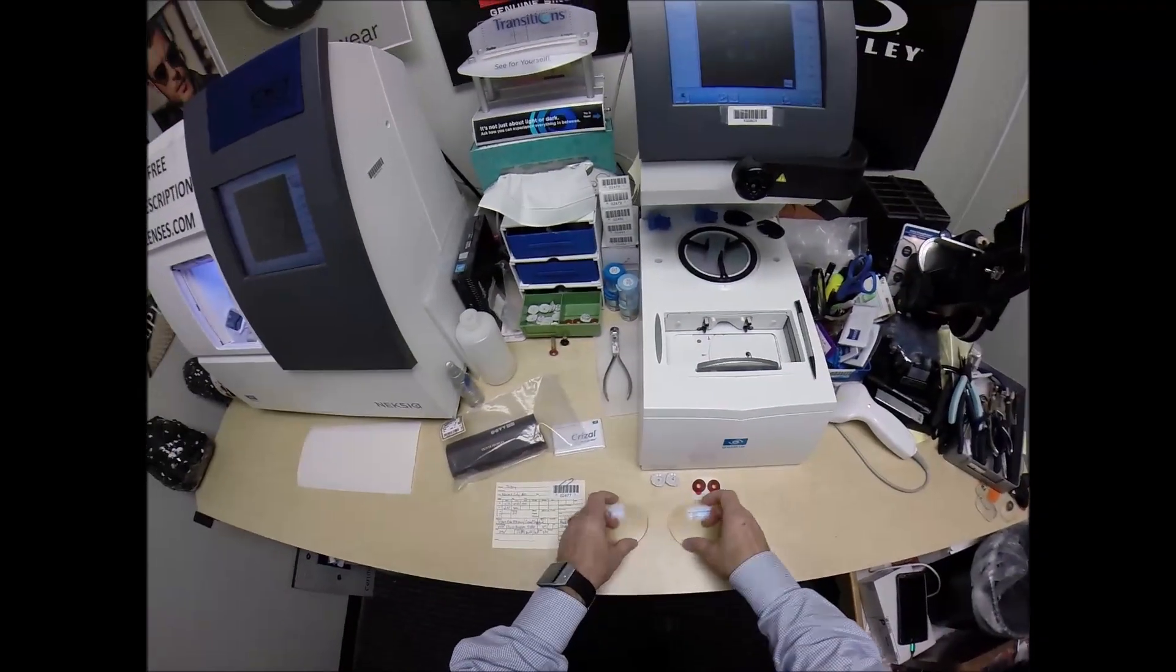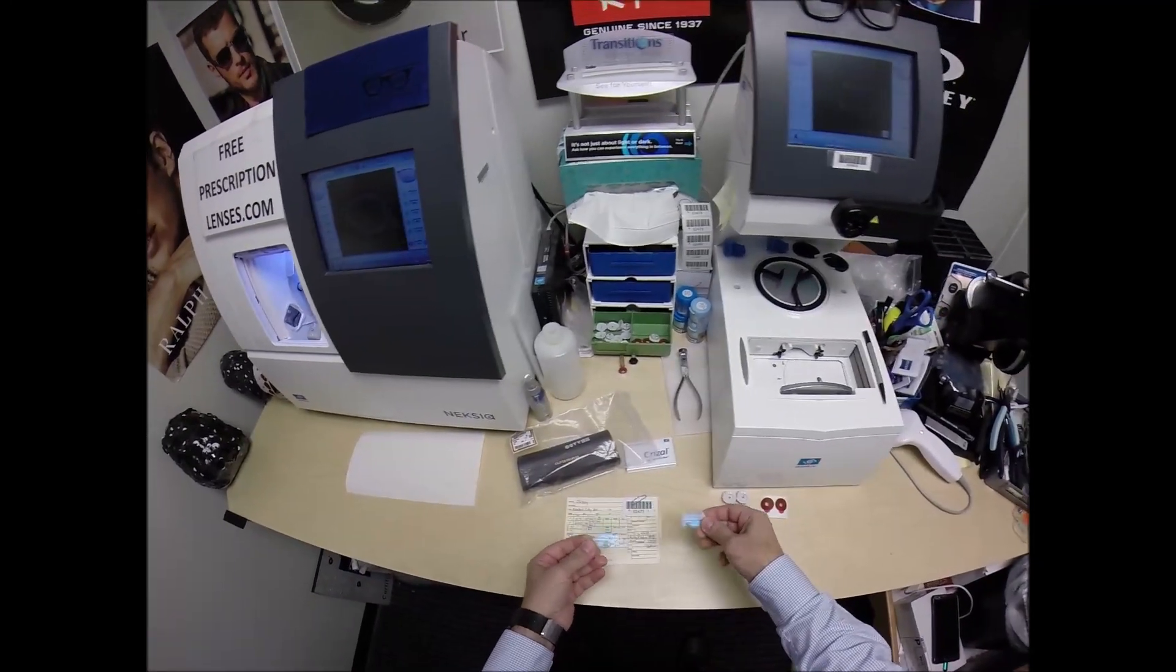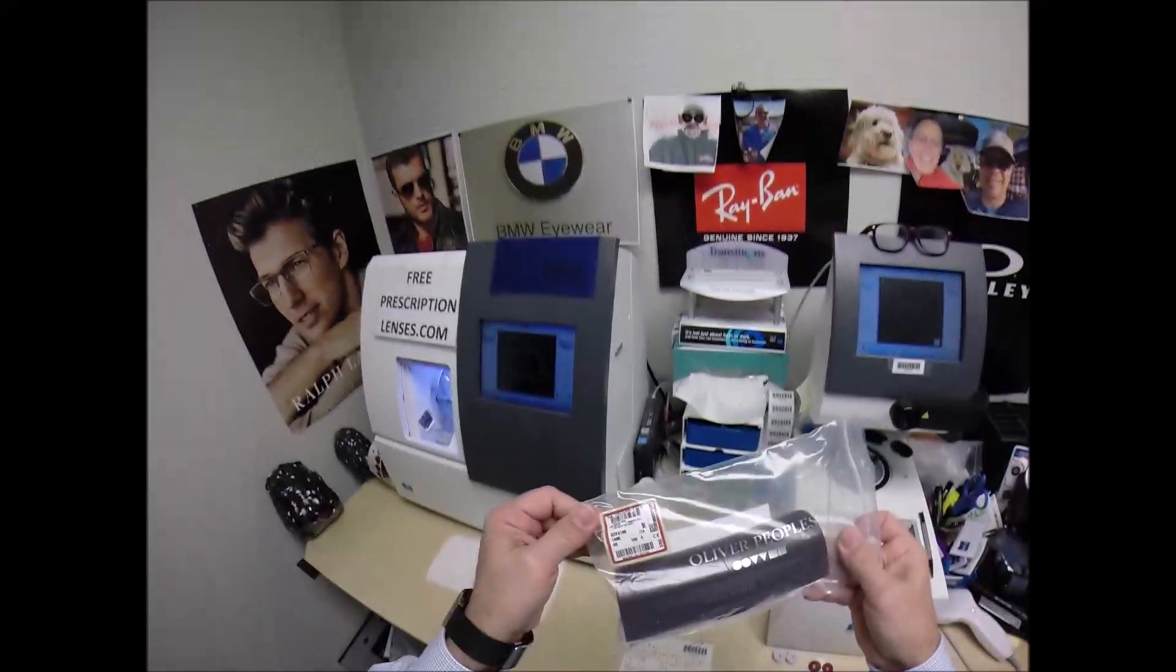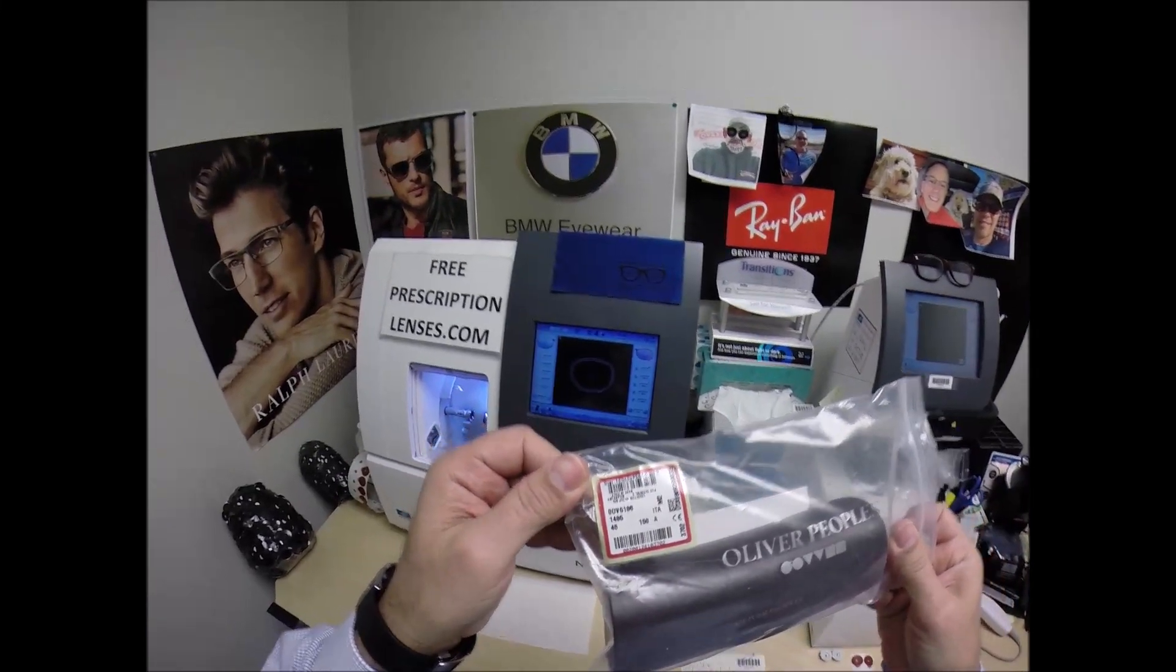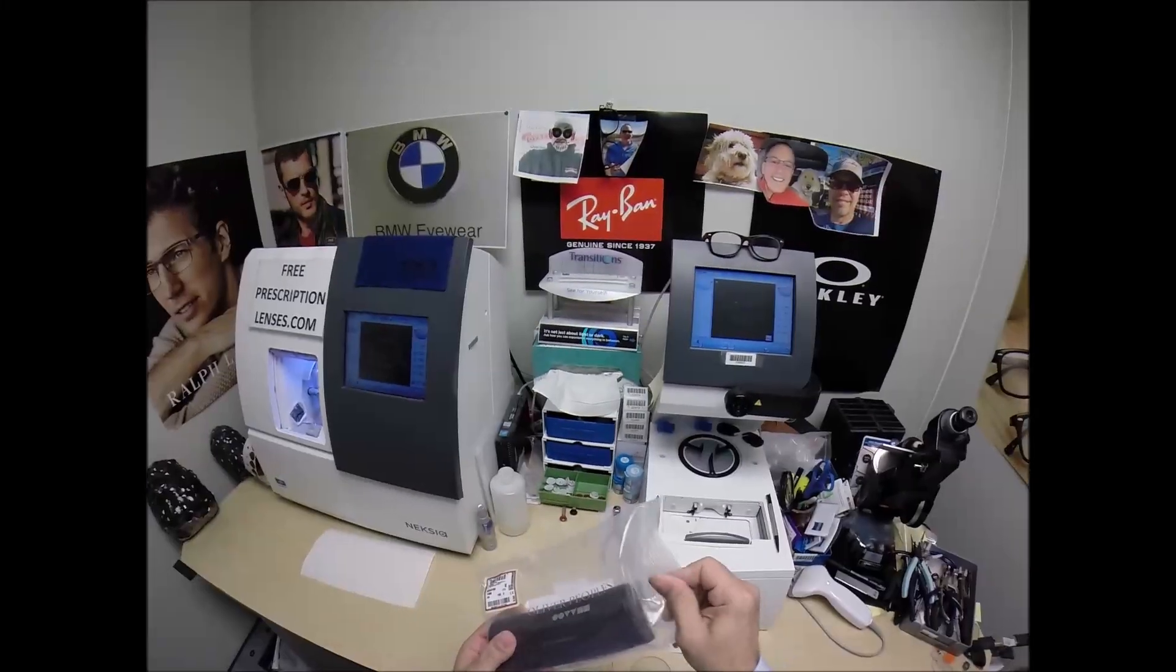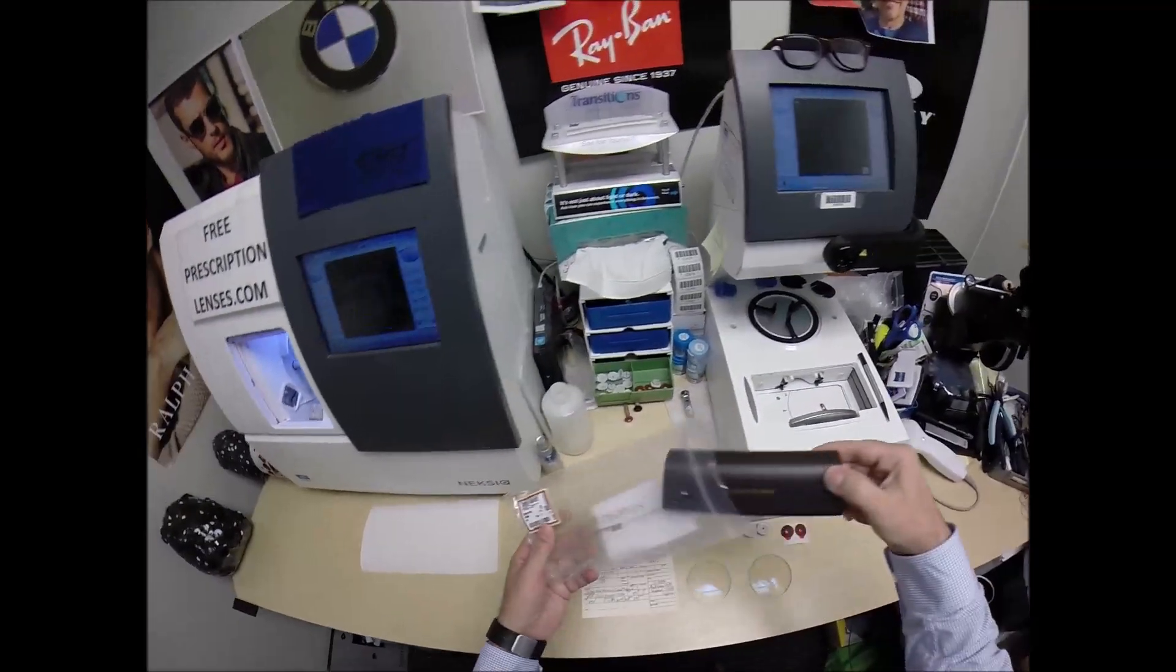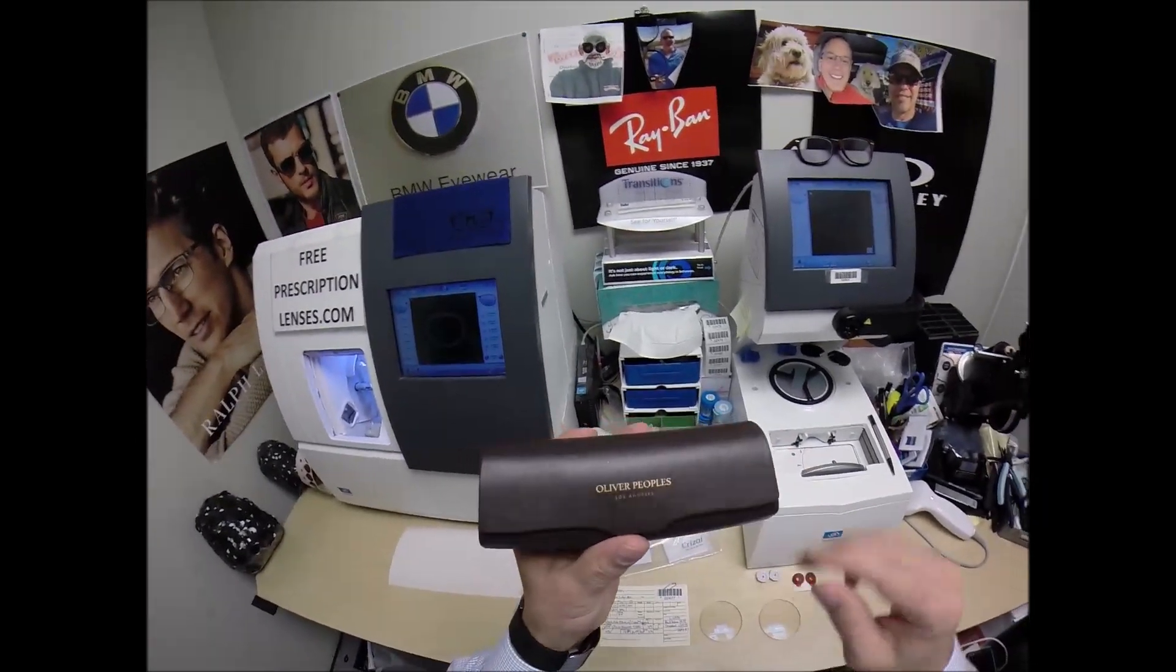I'm going to show everyone how I bring that love and feeling back to glasses when I cut the new Transitions Gen 8 Brown Lenses with Crizal Sapphire for your Oliver Peoples 5186, which is the Gregory Peck in the 1485 Buff Tortoise, 45 eye size. Let me get this bag open and take your frame out.